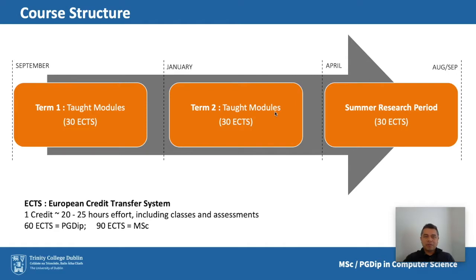Each semester is worth 30 credits. Most undergraduate courses take the summer off, so a full year is only 60 credits. In the case of this course, students continue to work over the summer to complete the 90 credits required of a typical MSc program in a single calendar year. This makes it quite a densely packed, intense year — but it means students can finish in a single calendar year, only pay one year's fees, and only take one year out of their lives.